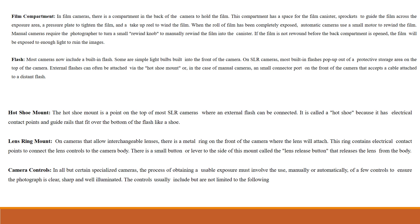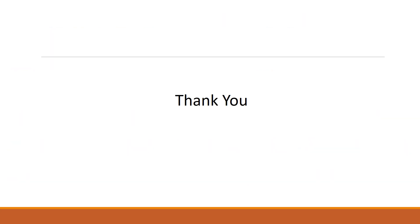Next is camera controls. In all but certain specialized cameras, the process of obtaining a usable exposure must involve the use — manually or automatically — of a few controls to ensure the photograph is clear, sharp, and well illuminated. The controls usually include but are not limited to the following. Thank you so much.